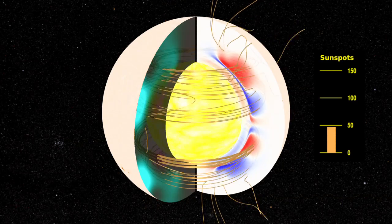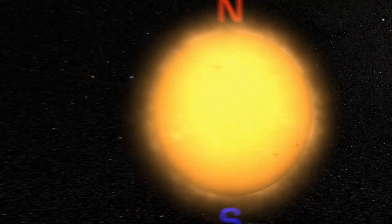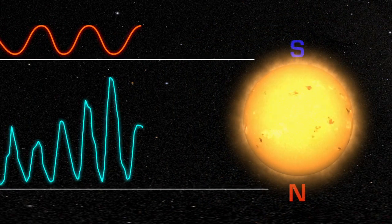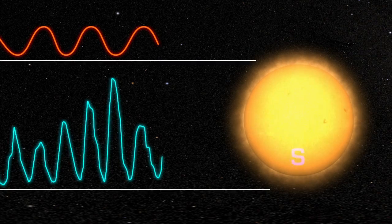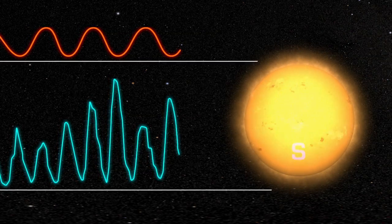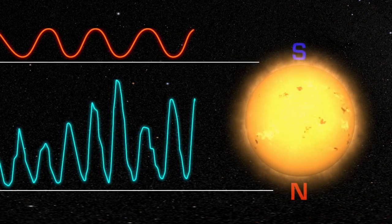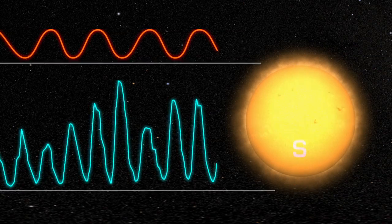Because the sunspot cycle follows a similar pattern regardless of the orientation of the poles, it only takes half as long as the solar cycle. The two cycles are different, but the 11-year sunspot cycle is often referred to as the solar cycle, which can be a little confusing.